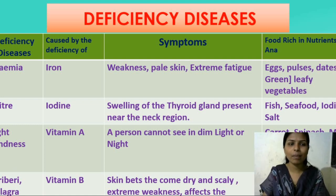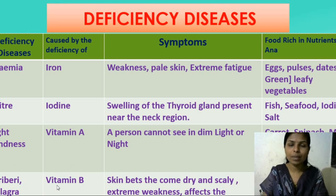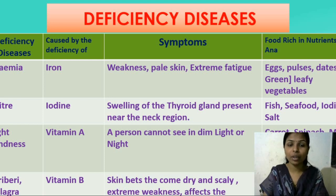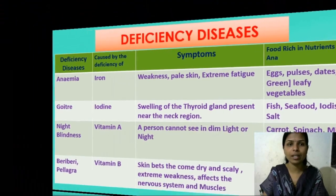Next we are going to discuss about Beriberi and Pellagra. This is caused due to the deficiency of Vitamin B. The symptoms of Beriberi and Pellagra are that the skin becomes dry and scaly, extreme weakness, and it affects the nervous system and the muscles. Foods rich in Vitamin B include milk, eggs, meat, green leafy vegetables, and cereals.